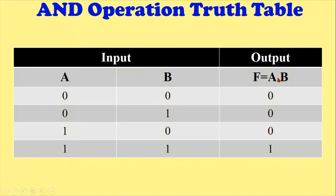The rightmost output column is F equals A dot B. As we know, the AND operation is the dot operation, which means multiplication. For the first value, A is zero and B is zero, so zero multiplied by zero gives zero. Second: A is zero and B is one, so zero into one gives zero. Third: A is one and B is zero, giving zero. Fourth: A is one and B is one, so one multiplied by one gives one.